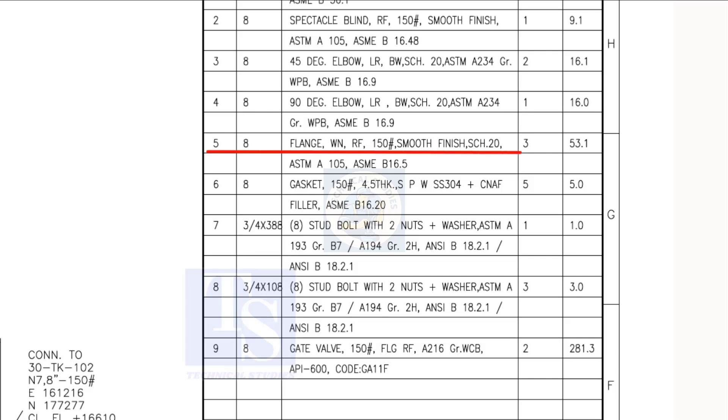Item number 5 is weld neck raised face flange, the rating is 150 pound. Item number 6 is spiral wound gasket and item number 8 is stud bolts. Both these items are not relevant for prefabrication unless the pipe length is affected.